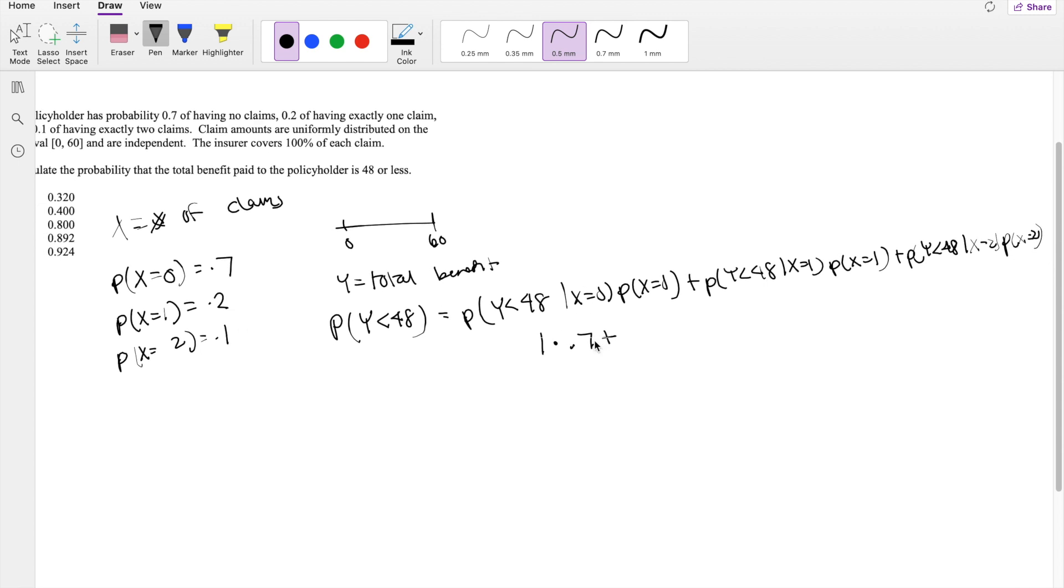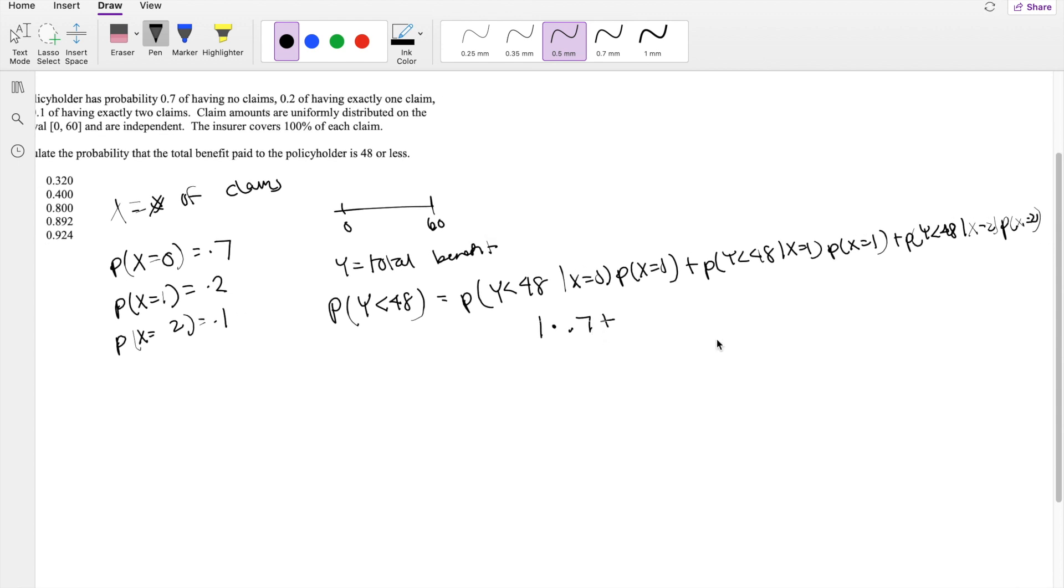So what is the probability that, given they have one claim, their total benefit is less than 48? Because we know it's uniform on 0 to 60, less than 48 here, it's just 48 divided by the probability distribution function, which we know for uniform distribution to be 1 over b minus a, where b is the upper limit and 0 is the lower limit. So it's 1 over 60, so it will be 48 over 60, for the probability that y is less than 48, given that x is equal to 1. So that's 48 over 60, times the probability that x is equal to 1, that's 0.2.